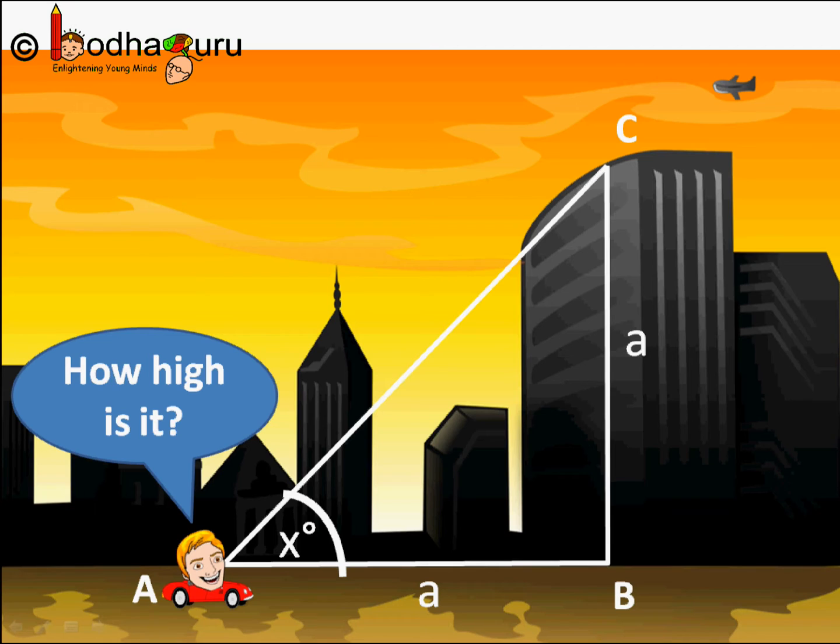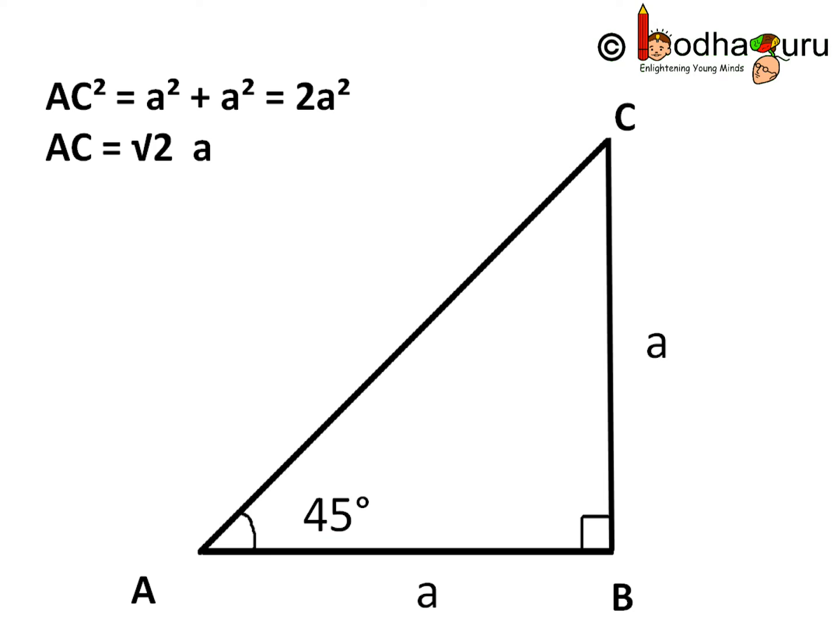And because two angles are same, 45 degree, angle A and C, ABC becomes an isosceles triangle. This means side AB is equal to side BC. That is the measure of side AB is equal to side BC. Let us say their length is A.